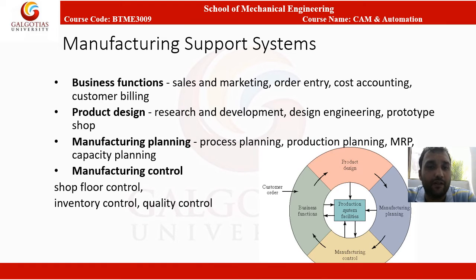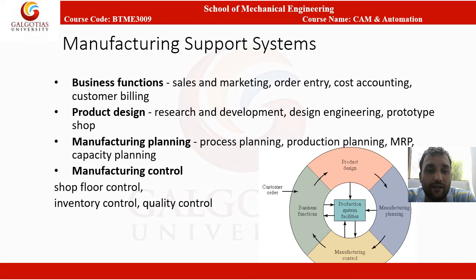The manufacturing support system includes business functions, product design, manufacturing planning, and manufacturing control. Business functions include sales and marketing, order entry, cost accounting, and customer billing. Product design includes research and development, design engineering, and prototyping. Manufacturing planning includes process planning, production planning, MRP, and capacity planning. Manufacturing control includes shop floor control and inventory control.